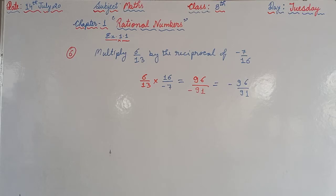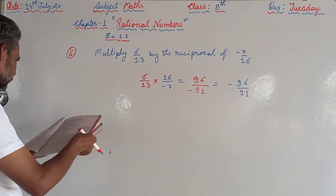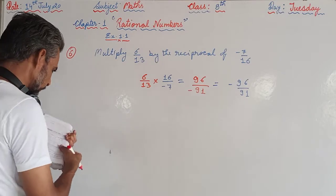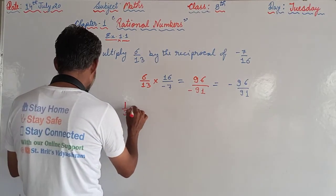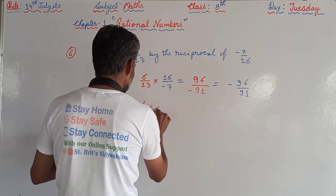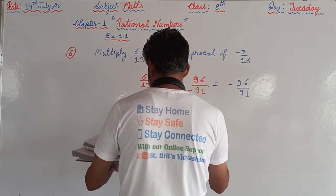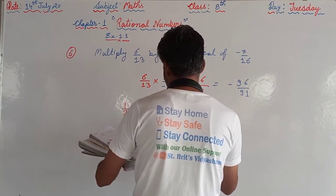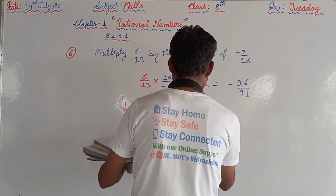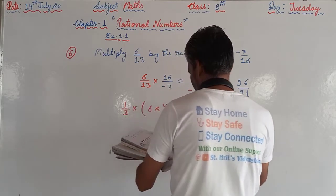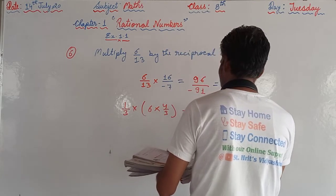So we will proceed to the next question. That is problem 10: which property allows you to compute 1 upon 3 into 6 into 4 upon 3 as 1 upon 3 into 6 into 4 upon 3 into 6 into 4 upon 3?